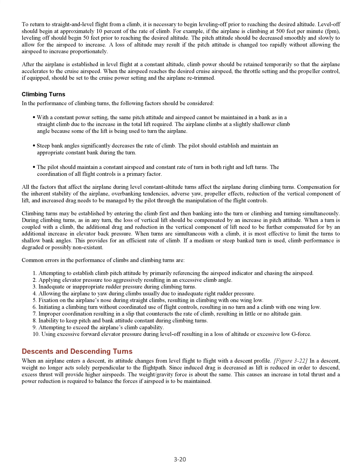To return to straight and level flight from a climb, it is necessary to begin leveling off prior to reaching the desired altitude. Level off should begin at approximately 10% of the rate of climb. For example, if the airplane is climbing at 500 feet per minute (FPM), leveling off should begin 50 feet prior to reaching the desired altitude. The pitch attitude should be decreased smoothly and slowly to allow for the airspeed to increase. After the airplane is established in level flight at a constant altitude, climb power should be retained temporarily so that the airplane accelerates to the cruise airspeed. When the airspeed reaches the desired cruise airspeed, the throttle setting and the propeller control (if equipped) should be set to the cruise power setting and the airplane retrimmed.